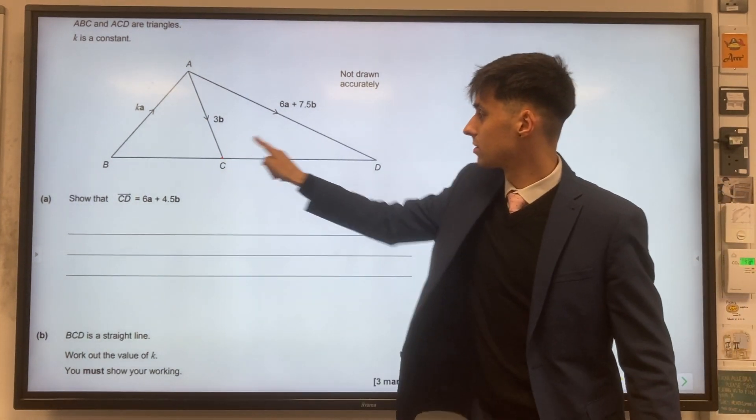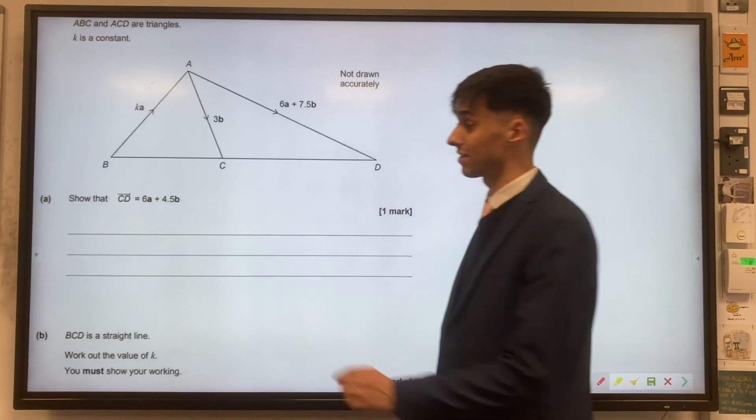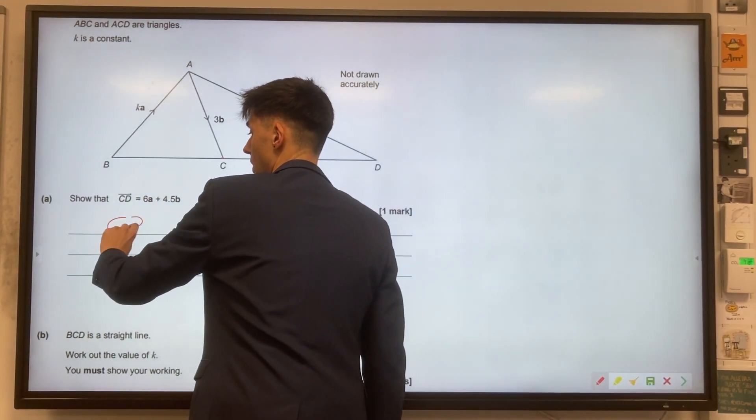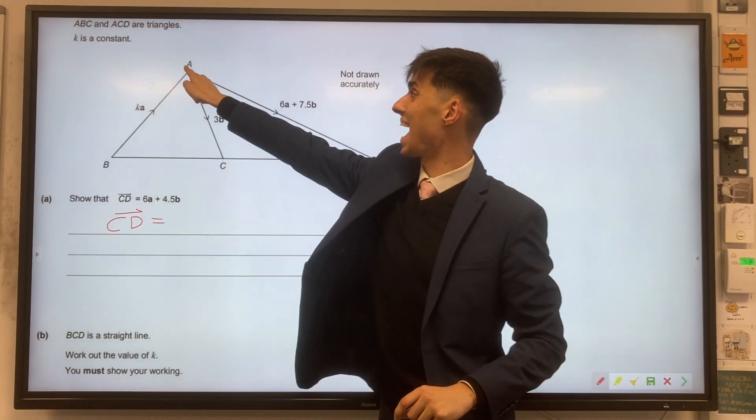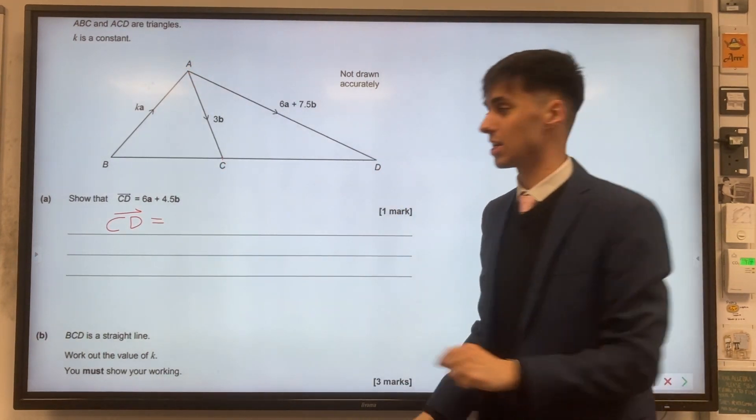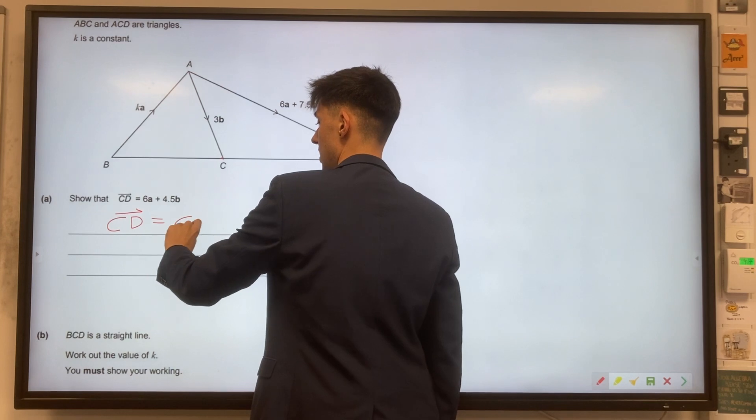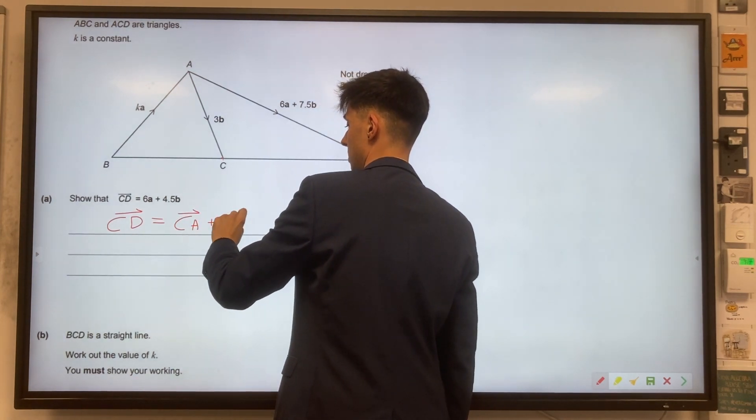To go from C to D, we have to break this path down. We can't go directly from C to D. We have to go from C to A, and then from A to D. So CA plus AD.